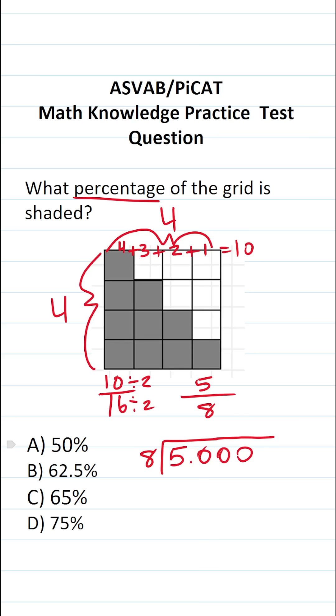How many times does 8 go into 5 without going over? It doesn't. How many times does 8 go into 50 without going over? Well, that prompts me to bring the decimal into my answer. 8 goes into 50 6 times without going over. 8 times 6 is going to be 48. 50 minus 48 is 2.